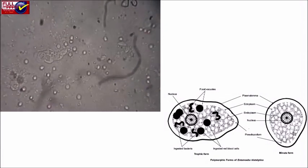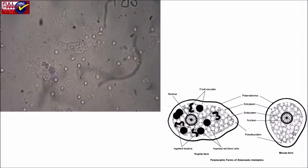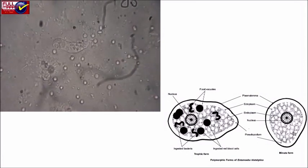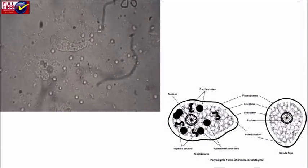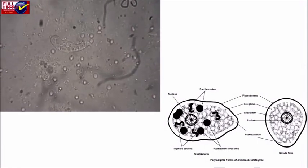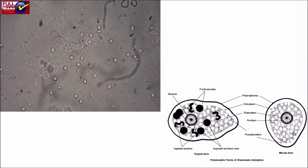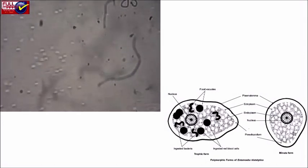Trophozoite form: It is active and feeding stage which is pathogenic in nature. Contractile vacuole is absent. Monopodial condition is present and pseudopodia is lobopodia type. Precystic form: It is spherical and inactive state. It resides only in the lumen of intestine and not in tissues.